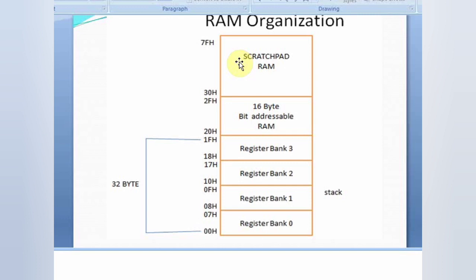The 80 bytes from location 30H to 7FH are used for read and write storage, normally called scratchpad memory — widely used by programmers for storing data and parameters. So the three sections of RAM are: 32 bytes for register banks and stack, 16 bytes for bit-addressable RAM, and 80 bytes for scratchpad memory.